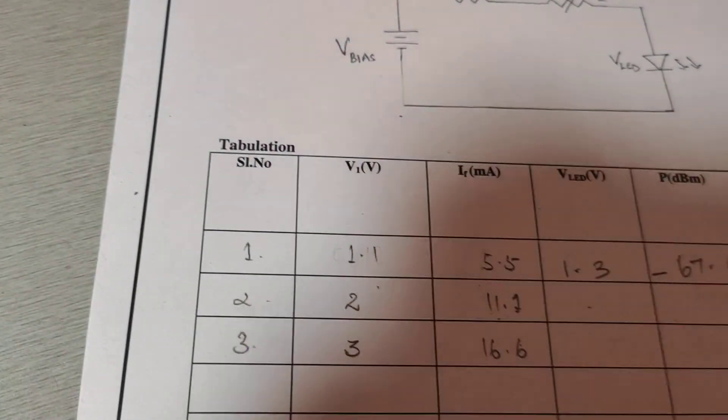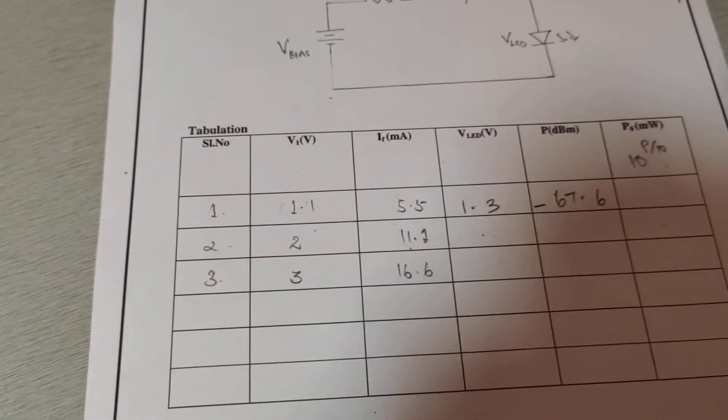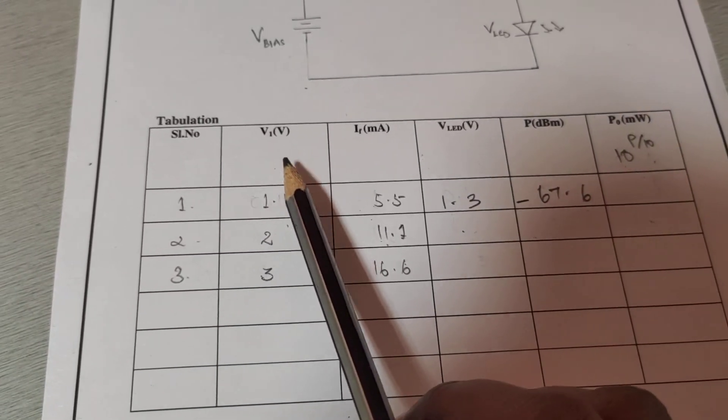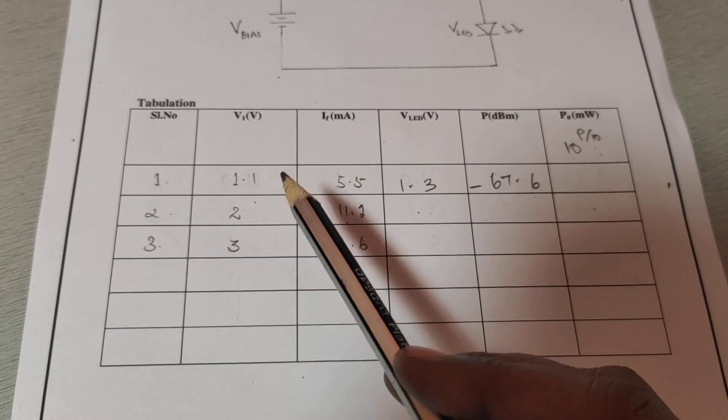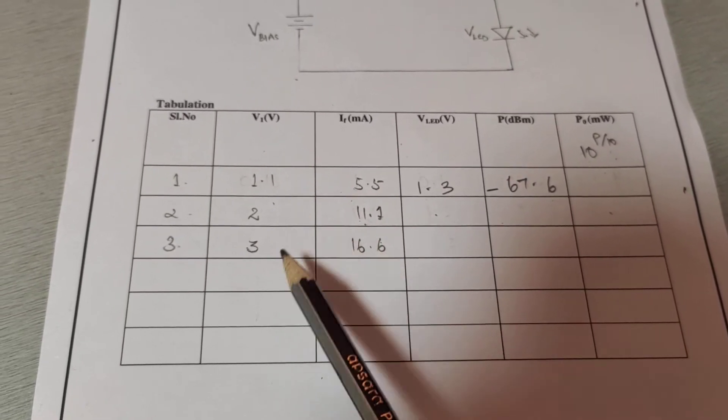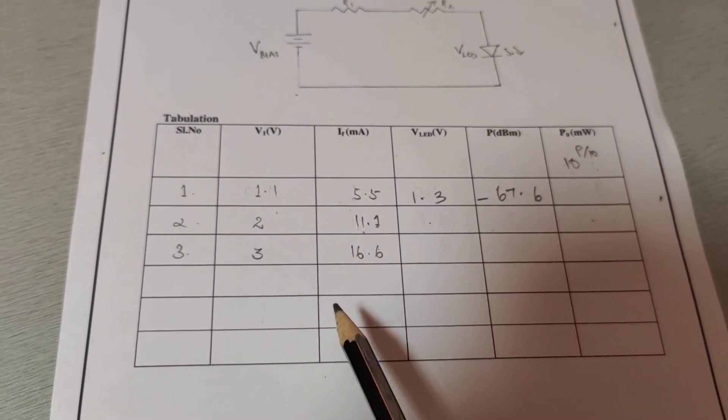This is the observation table for tabulation. We take readings for various values of V1: 1 volt, 2 volt, 3 volt, 4 volt, 5 volt, 6 volt.